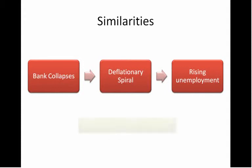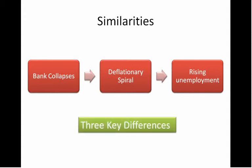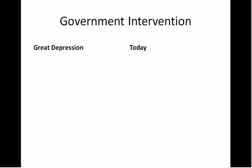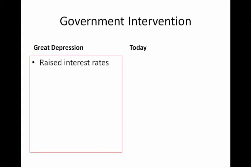I think there are three key differences between the Great Depression and the credit crisis, and those differences are going to be the focus of our discussion today. Let's start with government intervention. In the Great Depression, the government actually raised interest rates, and when a government raises interest rates they make things more expensive, so consumers struggled even more. They also let all the banks fail — they said we're not going to bail you out — and this had very immediate destructive ramifications.